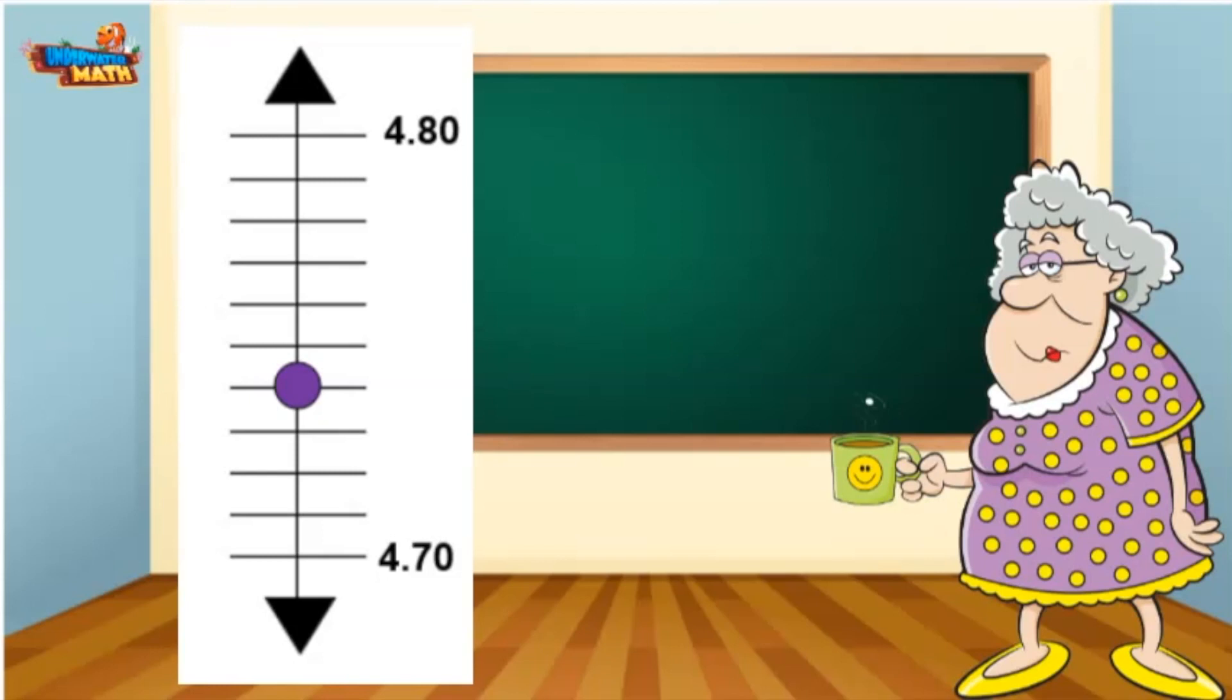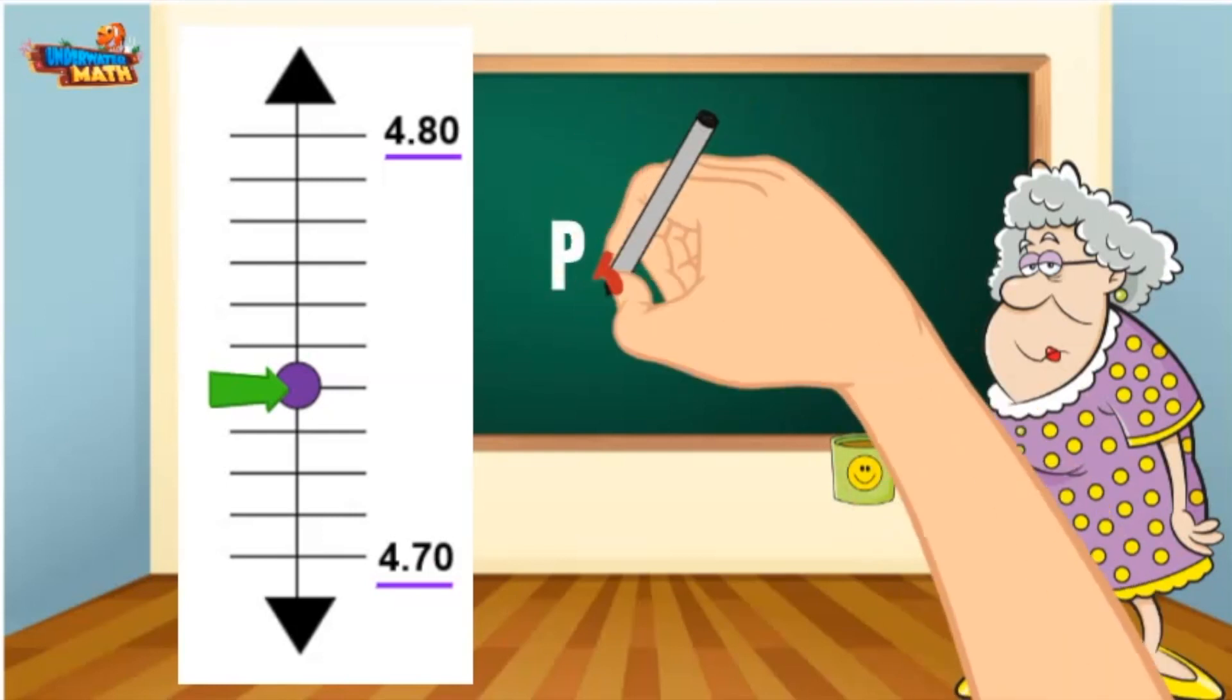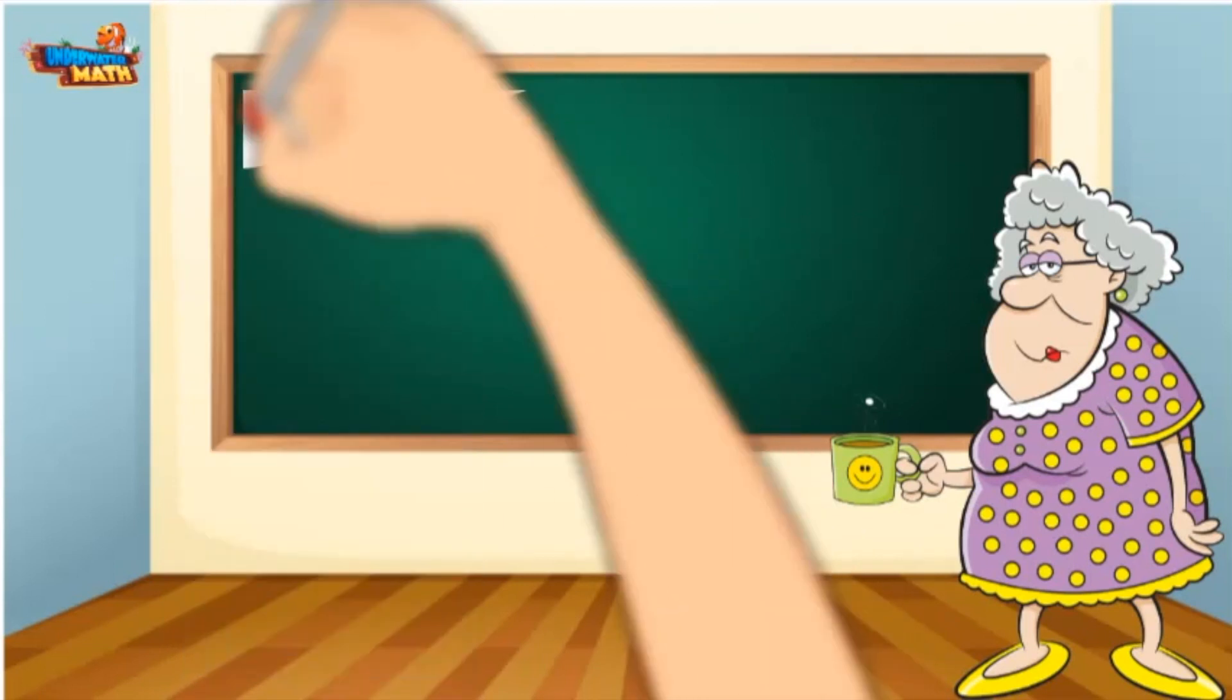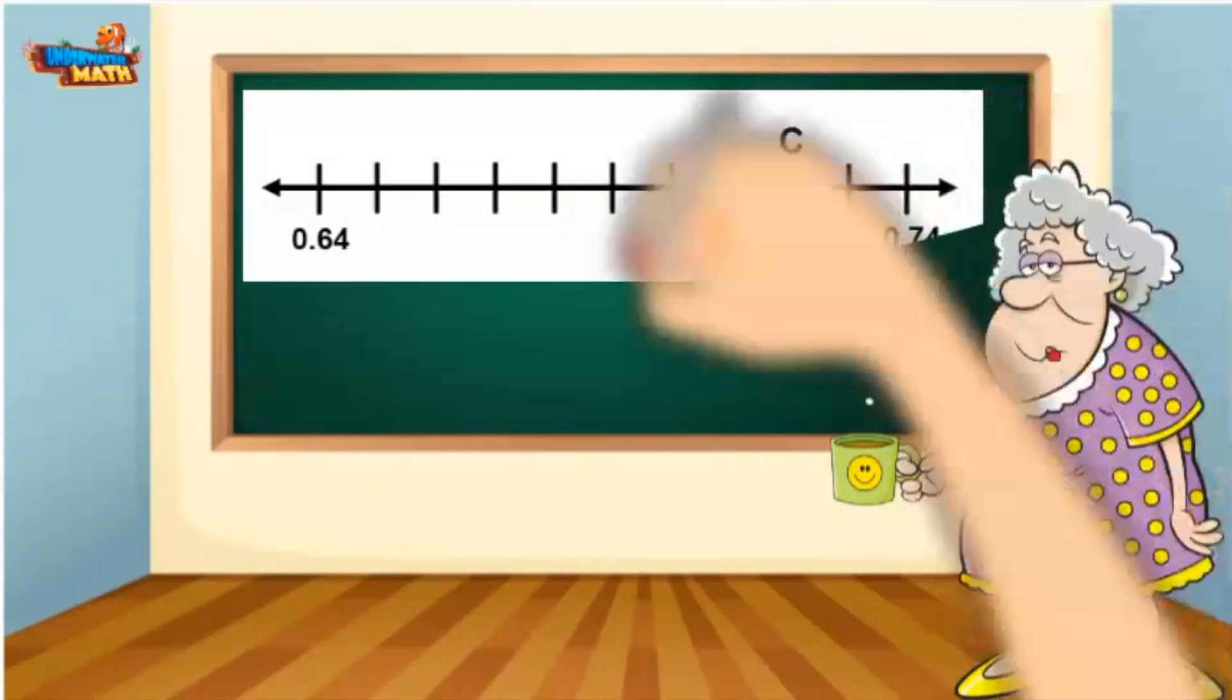I can count each tick mark by hundredths to determine what decimal is at the point. Here we go: 4 and 70 hundredths, 4 and 71, 72, 73, 74 hundredths. Well, we finally made it. The point represents 4 and 74 hundredths. Thank goodness, this is our last number line.